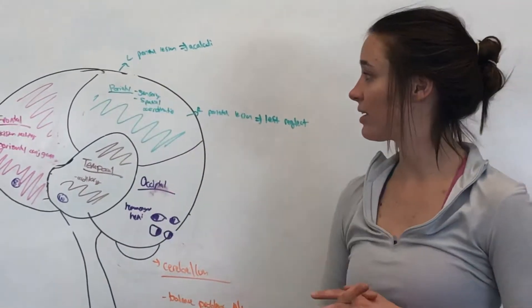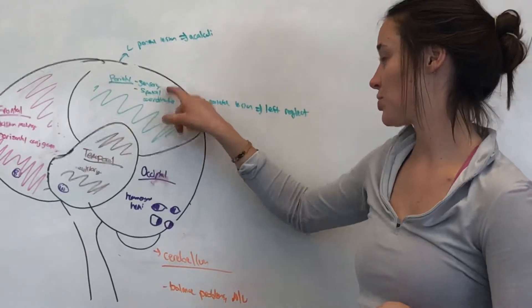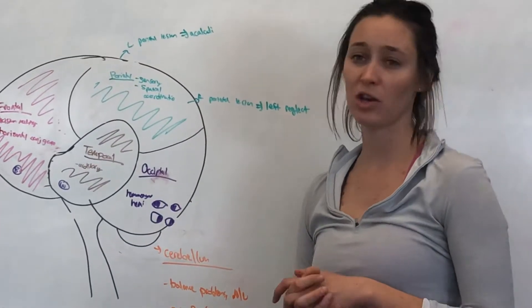Moving just superior to the parietal lobe, the parietal lobe has that sensory strip, like I mentioned. So it's responsible for sensory and then spatial coordination.